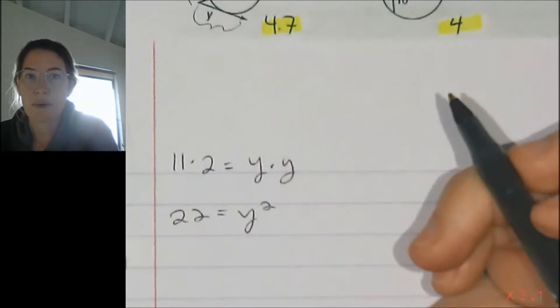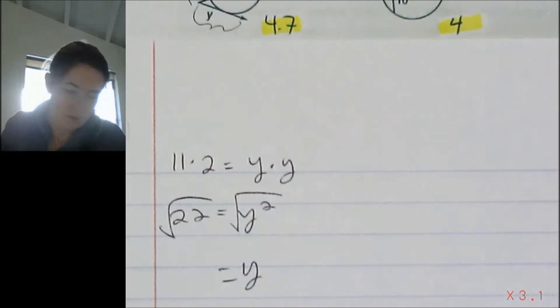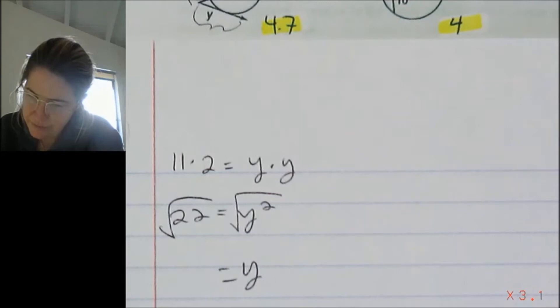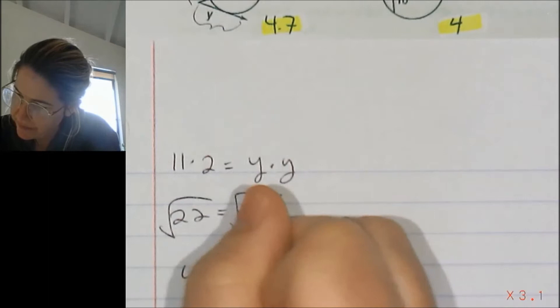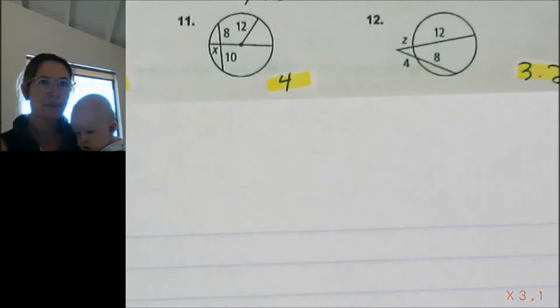So we get 22 is equal to y squared, and then square root. Y is equal to the square root of 22, which is 4.69. So we'll just say 4.7. And that's it.